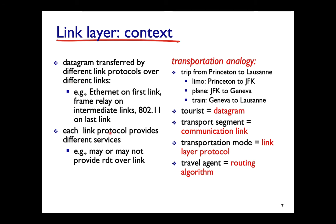Different link layers may use different technologies — for example Ethernet, frame relay (a wide area network technology), and 802.11 Wi-Fi. These protocols differ: some have reliable data transfer, others may not.